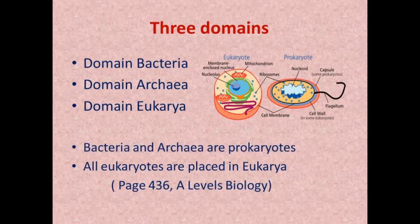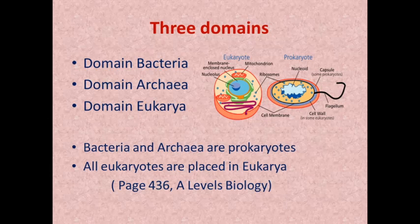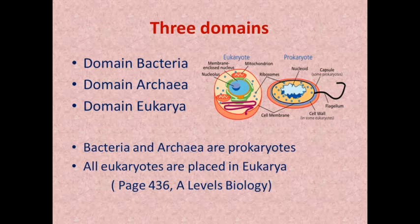In this chapter I explained three domains — the three major groups in which all organisms are placed. I have already explained domain Bacteria, domain Archaea, and domain Eukarya. Bacteria and Archaea are prokaryotes: they have no nucleus and no membrane-bound organelles. Eukarya are more complex, having a nucleus and all membrane-bound organelles present in a eukaryotic cell.